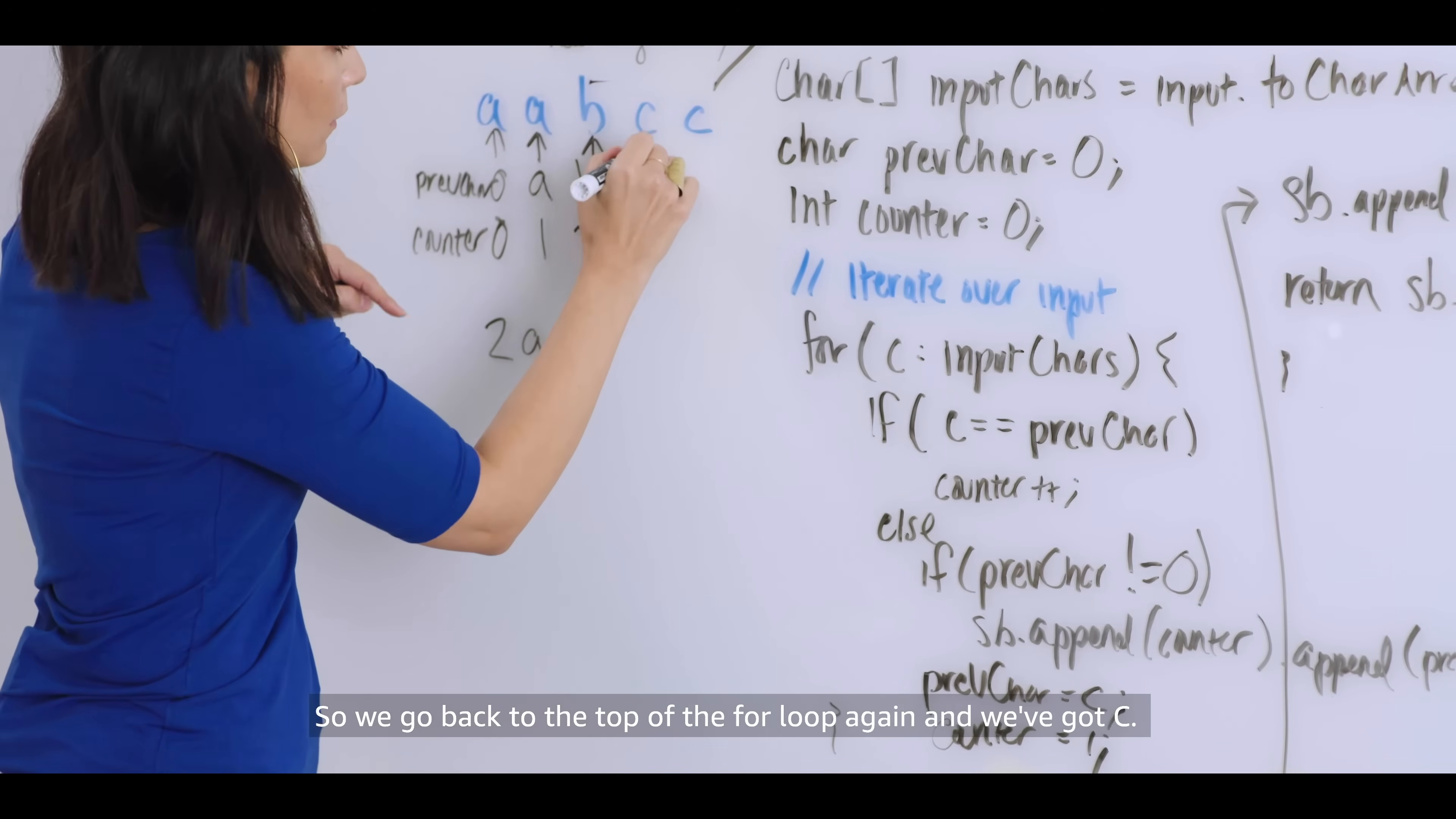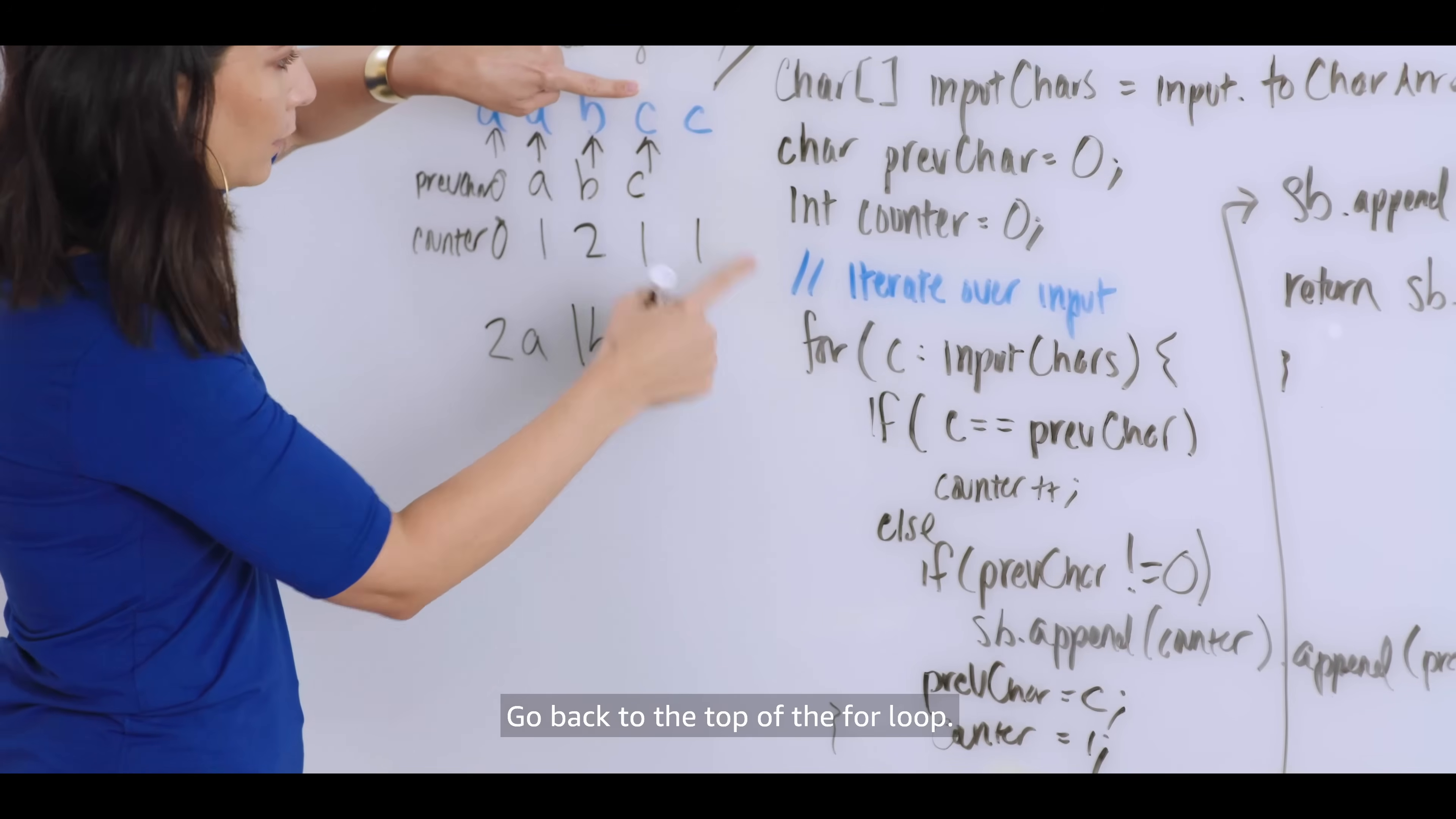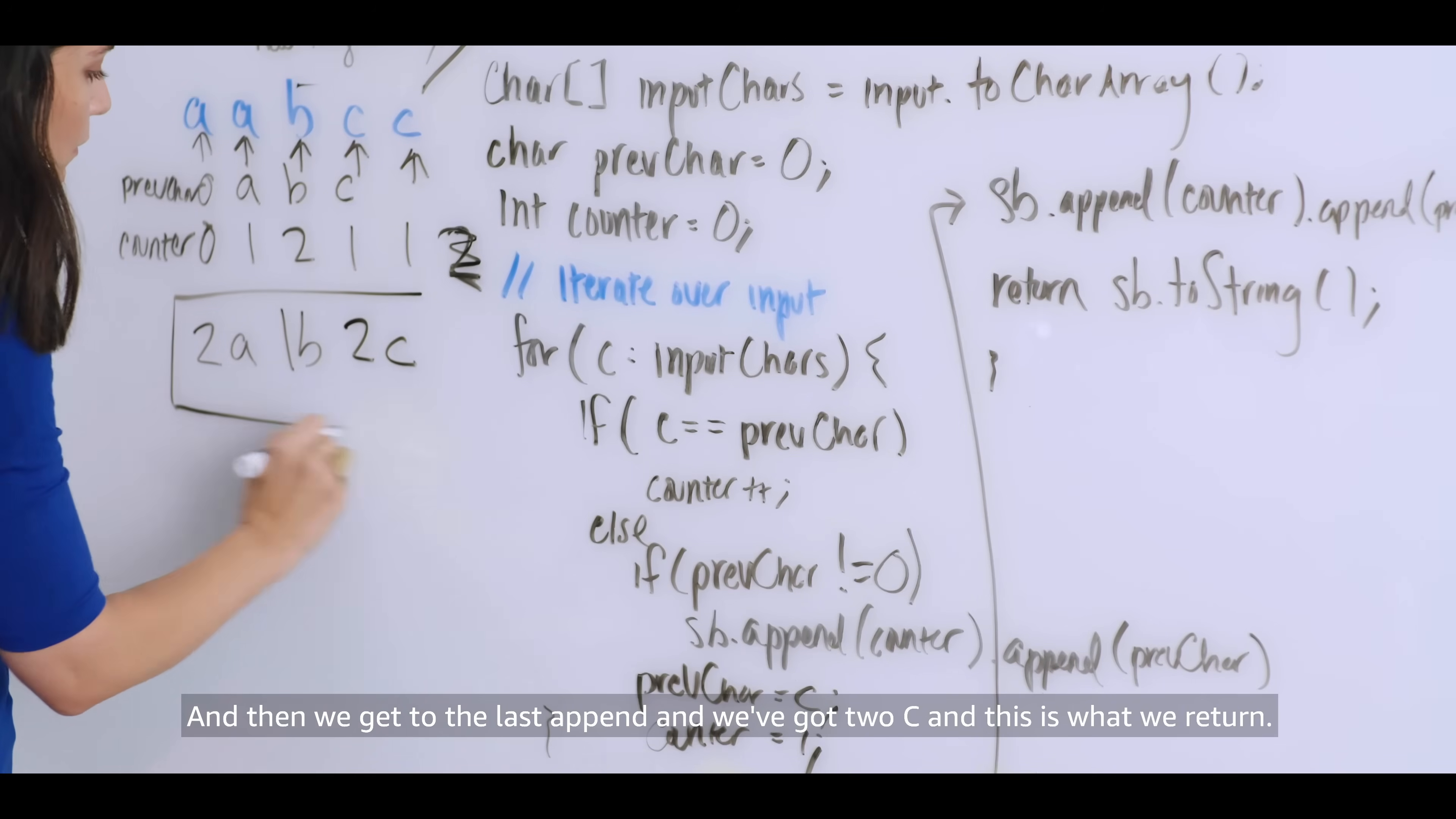So we go back to the top of the for loop again and we've got C. Is C equal to the previous one? Nope. So this becomes, let's see, where am I? We append again and we've got 1 and B. We reset this to C and 1. Go back to the top of the for loop. Here we are. Increment again. Actually, no, we don't increment. My mistake. We actually come out of this. And then, or yes, we have incremented. Sorry. And then we get to the last append and we've got 2 C. And this is what we return.